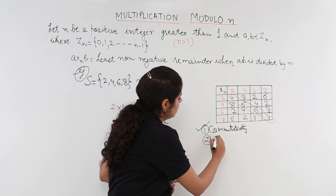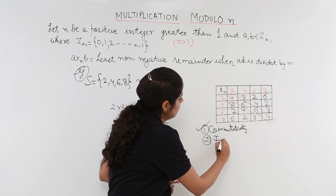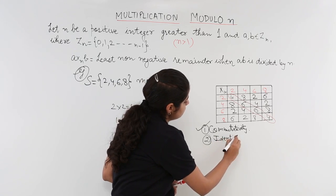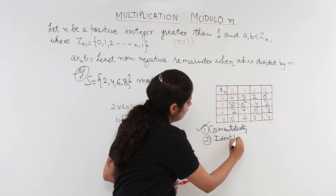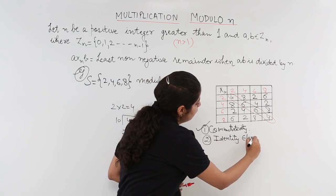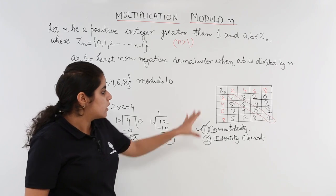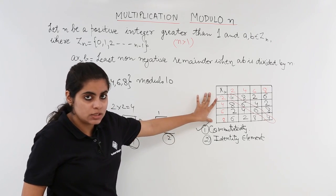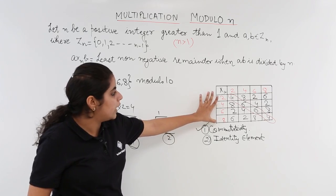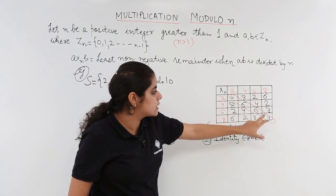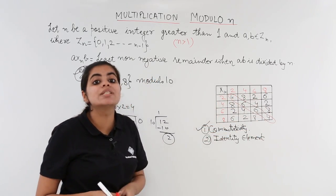Next what we need to check? We need to find out the identity element. Identity element is found out in the same way as we did in the previous video. What we do is we see the order. It is 2, 4, 6, 8 in the vertical order. Where do we have 2, 4, 6, 8? Just below 6.